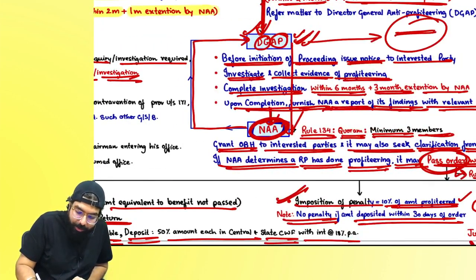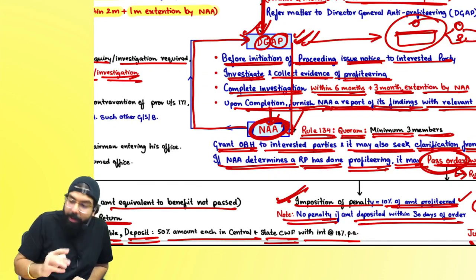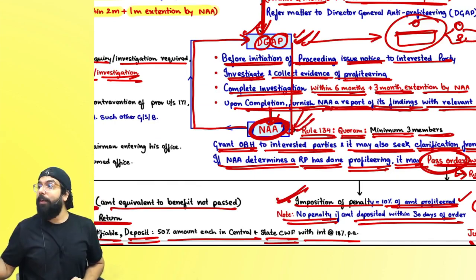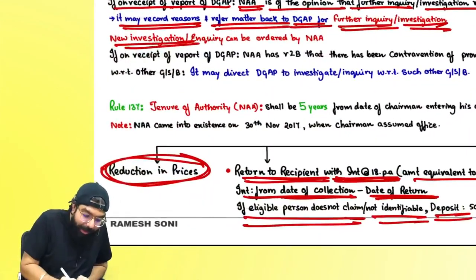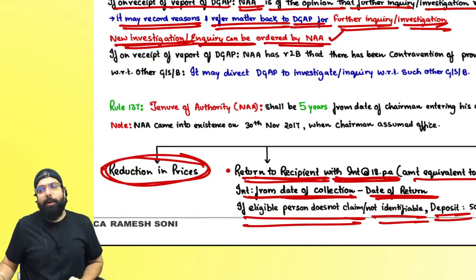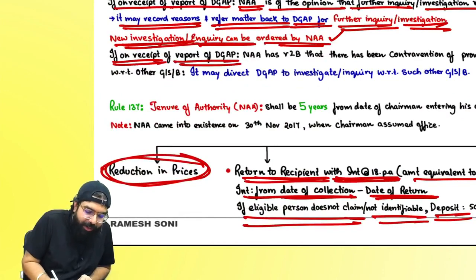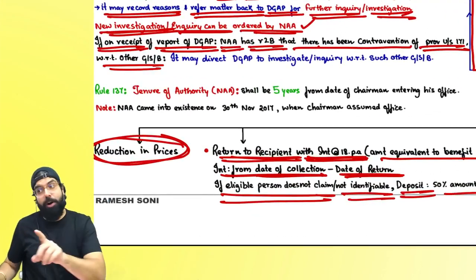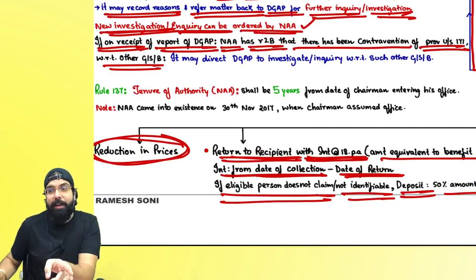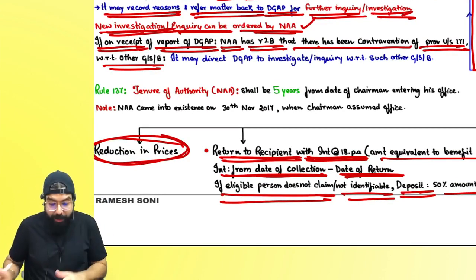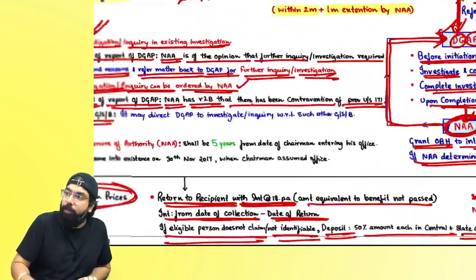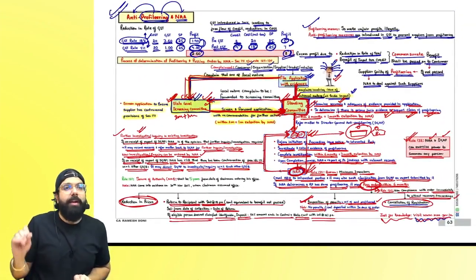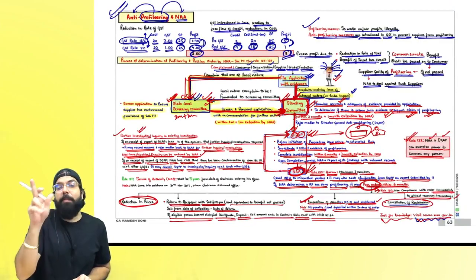For example, DGAP investigated masala dosa. Now the anti-profiteering authority has a doubt — in idli and other items also, is he doing profiteering? So they can order a new investigation. If on receipt of the DGAP report, the authority has reason to believe there is contravention of Section 171 with respect to other goods or services, it may direct DGAP to investigate those other goods or services as well. So yes — the case can be referred back for further investigation and a new investigation can also be ordered.